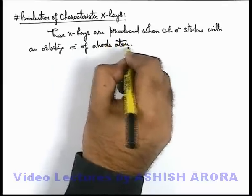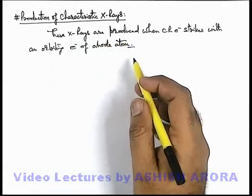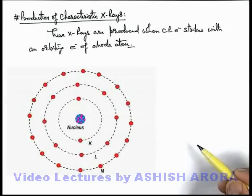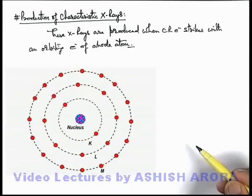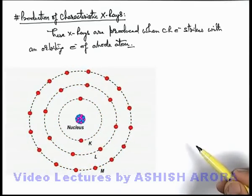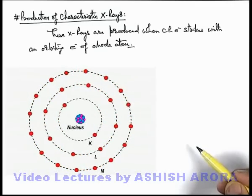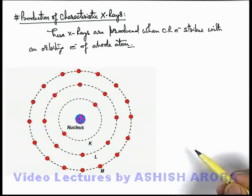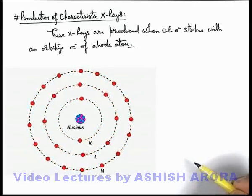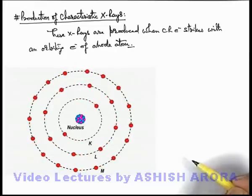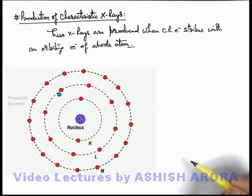Now how are the x-rays produced? Let's have a look at the situation. Here you can see this picture again showing the atom of the anode material, and when the external cathode ray electron comes and strikes an orbiting electron — say in this situation it is striking a K-shell electron.